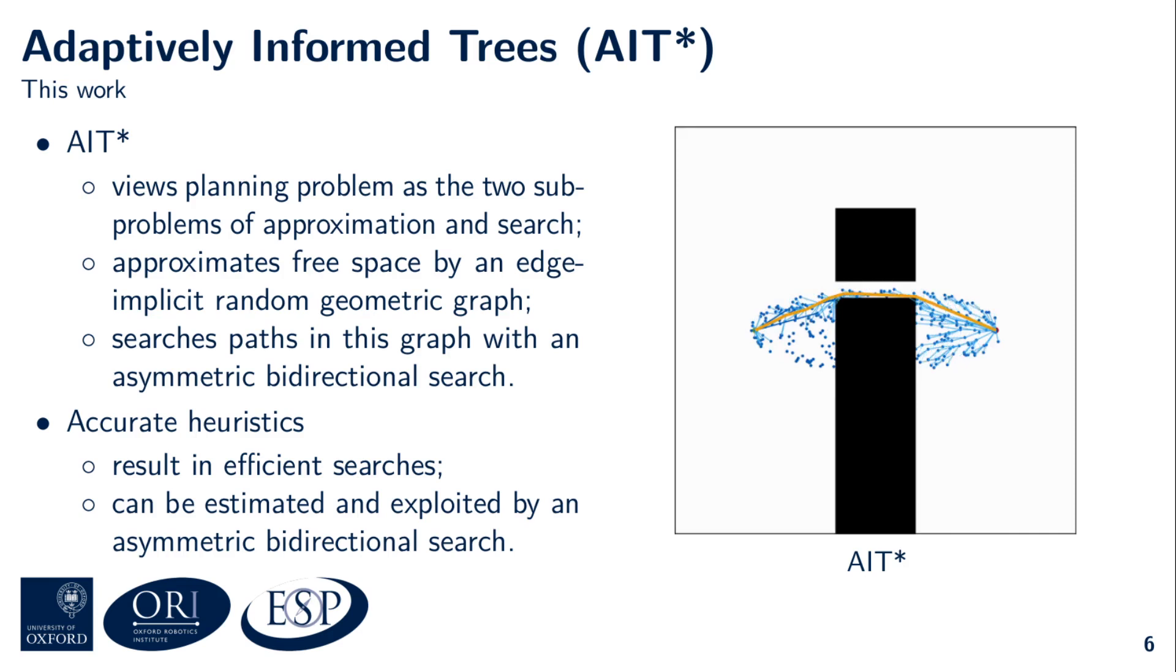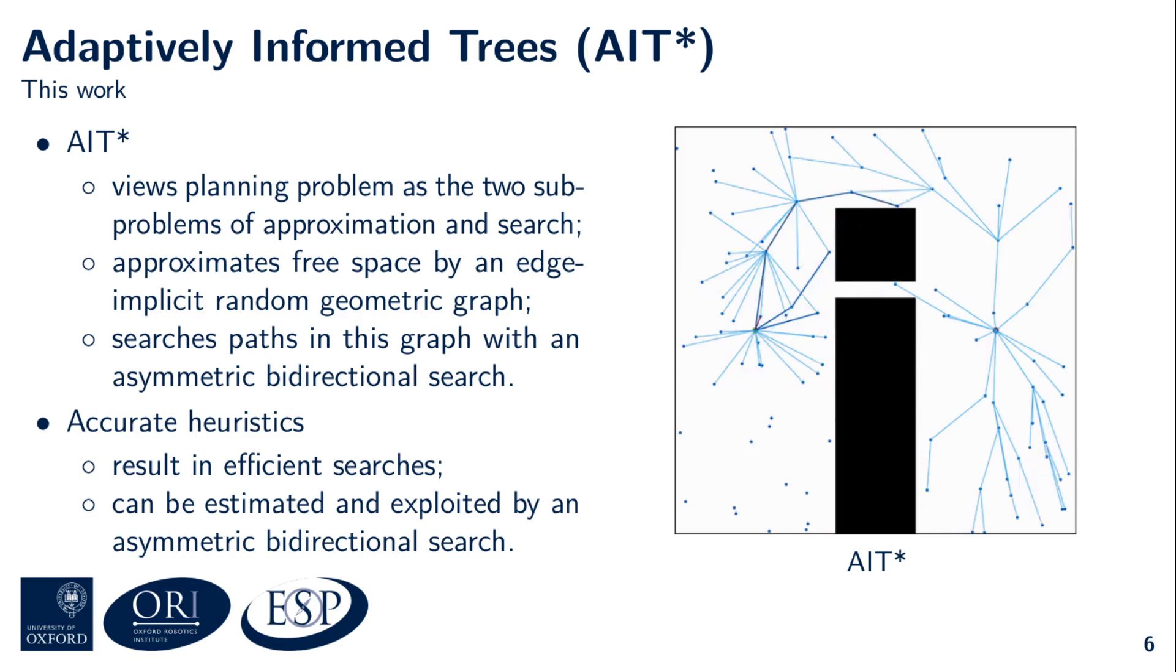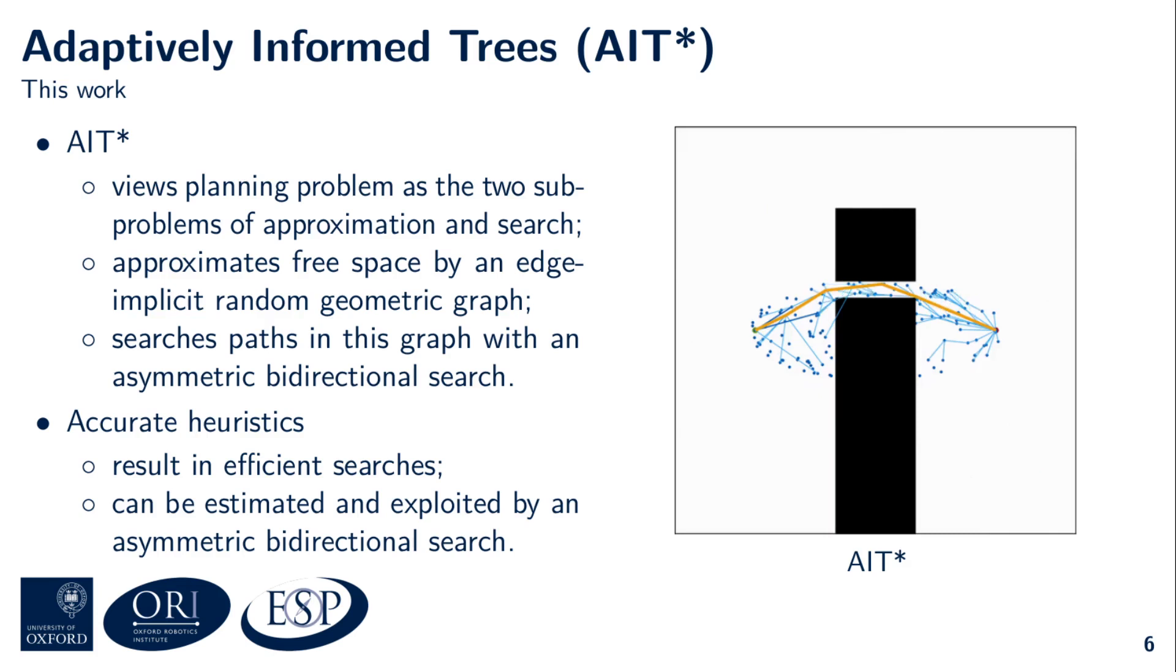It views the state space samples as an increasingly dense edge-implicit random geometric graph, which it uses to approximate the collision-free region of the state space. It searches this approximation with an asymmetric bidirectional search in which both searches continuously inform each other. AIT* builds on the realization that accurate heuristics increase the efficiency of informed search algorithms. Its asymmetric bidirectional search can simultaneously estimate and exploit an accurate, problem-specific heuristic, which can result in improved performance.